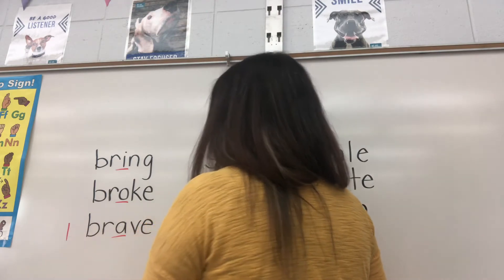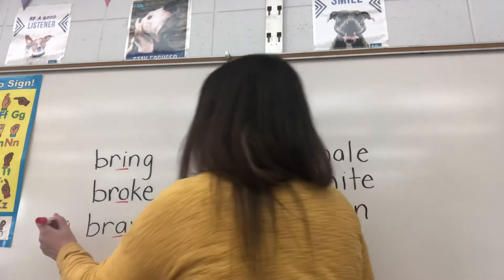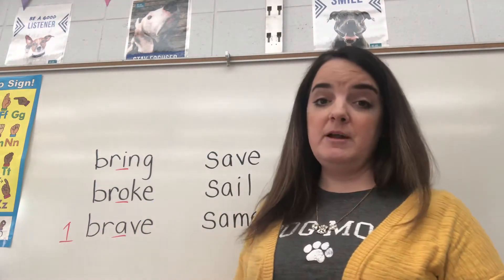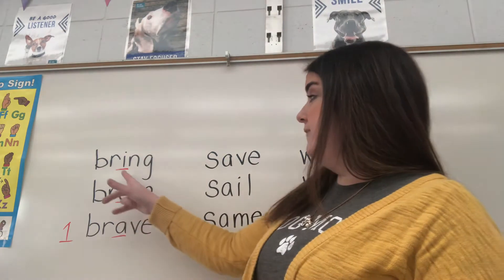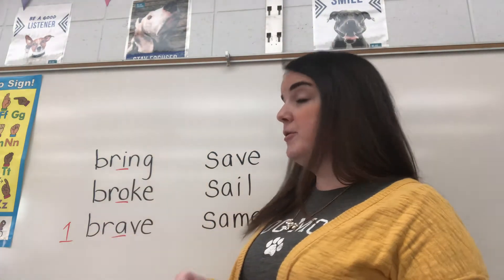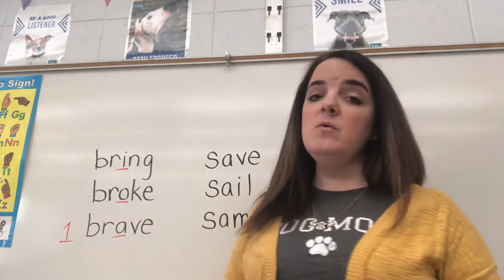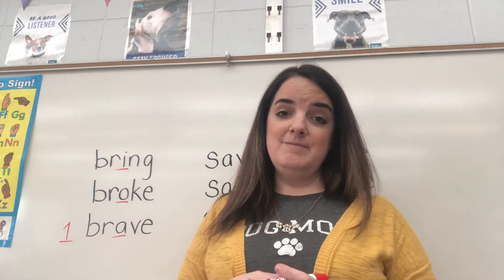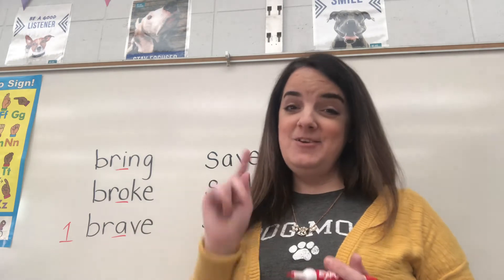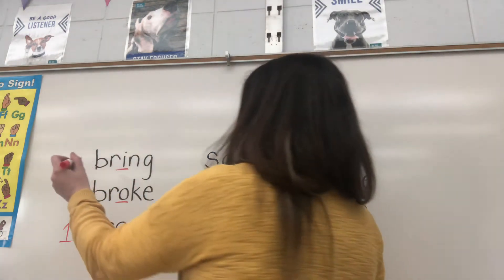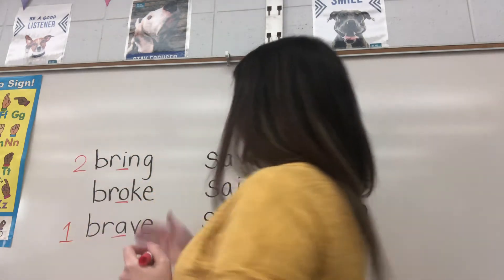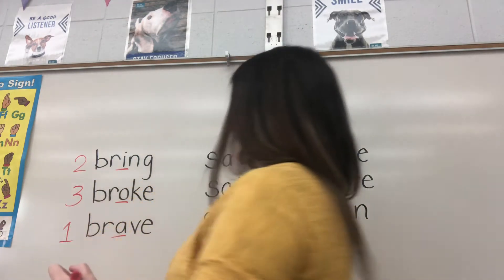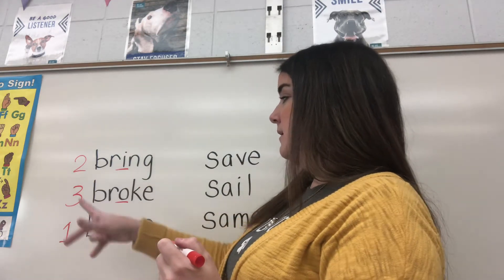So that's my first word. That would be first for alphabetical order. Now I have bring and I have broke. Looking at the I and the O, which letter comes first, I or O? If you answered I, you are correct. So my second word would be bring, and then that of course would make my third word, broke. So it would be brave, bring, broke.